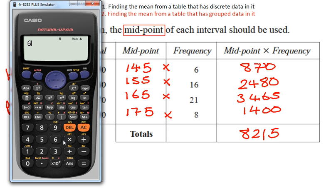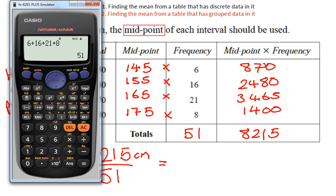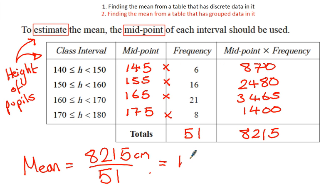So we've got 870, 2,480, 3,465, and 1,400. So that's 8,215. And our total frequency, 6 plus 16 plus 21 plus 8, that's 51. So to find the mean, just like last time, we take our total, 8,215, that's centimeters, that's the height. We're going to divide that between the 51 pupils that were asked. So 8,215 divided by 51, so that's 161.1 centimeters. Which makes sense as a mean, because that's sort of just between or very close to the extreme of this class and the extreme of this class. And therefore, that makes sense that the average height is that length. So that would be your answer.